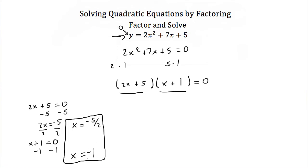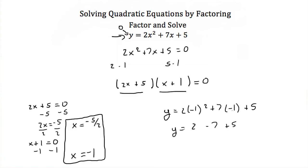Let's plug in x is equal to negative 1 and see what happens. We'll have y is equal to 2 times negative 1 squared plus 7 times negative 1 plus 5. Now negative 1 squared is a positive 1, multiply that by 2 and you just get 2. 7 times negative 1 is negative 7, and then plus 5. 2 minus 7 is a negative 5. Add 5 again and you end up with y is equal to 0, which is what we were looking for. So negative 1 is a solution. So just by plugging in these x values, you can double check your work.